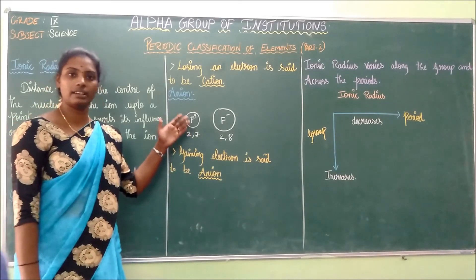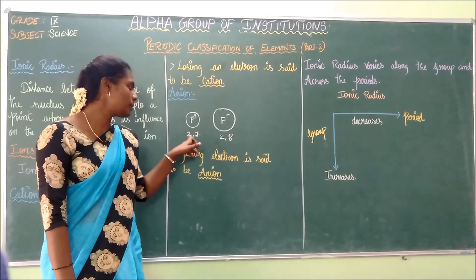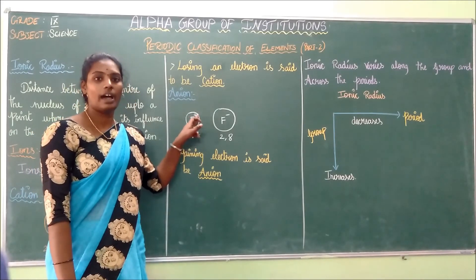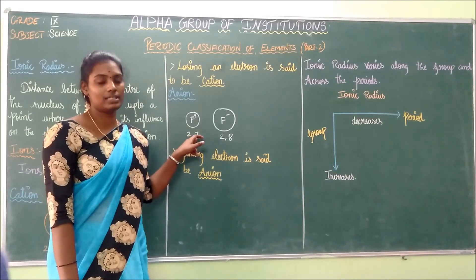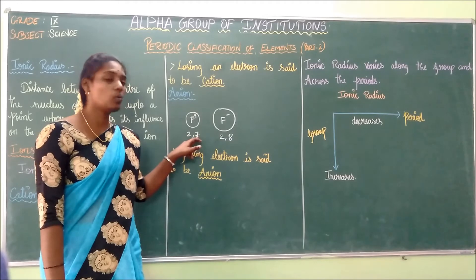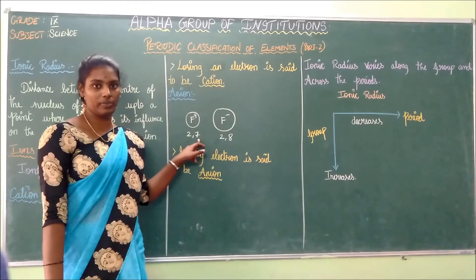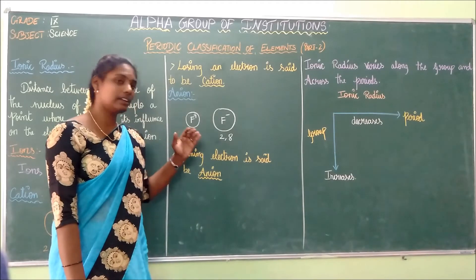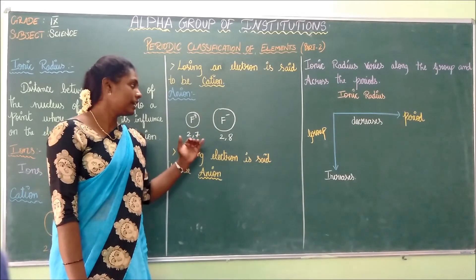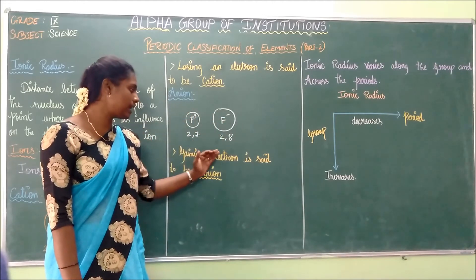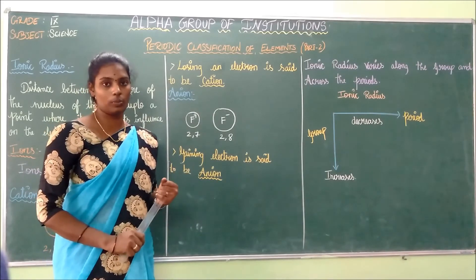On the other hand, gaining an electron is said to form an anion. For example, the atomic number of fluorine is 9 and its electronic configuration is 2, 7. It needs one more electron to attain stable electronic configuration. When fluorine gains one electron, it becomes negatively charged, forming an anion. So losing an electron gives a cation and gaining an electron gives an anion.